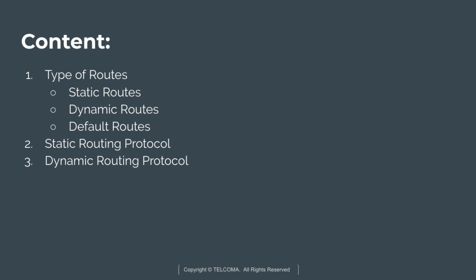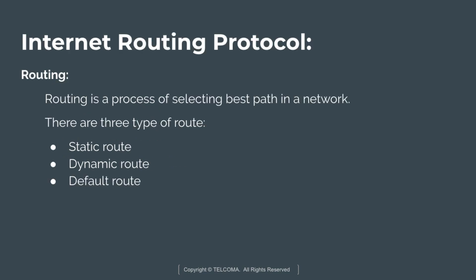Starting with the very first, let's discuss about what is routing. Routing is a process of selecting the best path in a network to route the packets. There are three types of routes: static route, dynamic route, and default route.